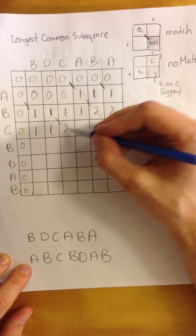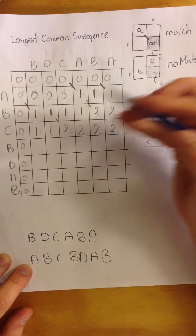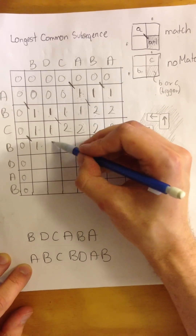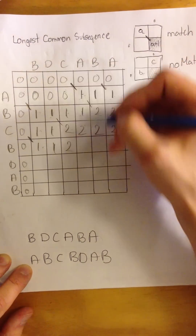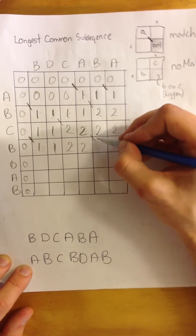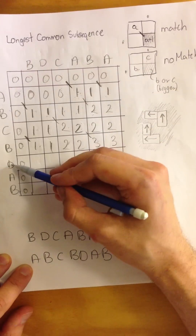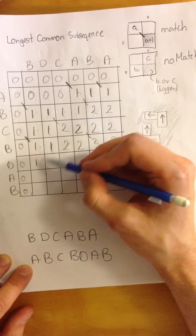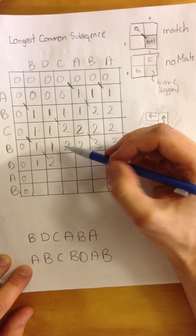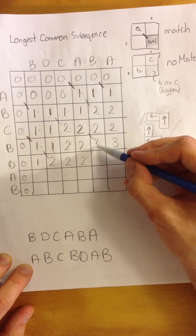No match, biggest value two. B and C — no match, biggest value two. No match, biggest value two. No match, biggest value two. B and B — match, biggest value three. No match, biggest value three. No match, biggest value three. B and D — no match, biggest value three.